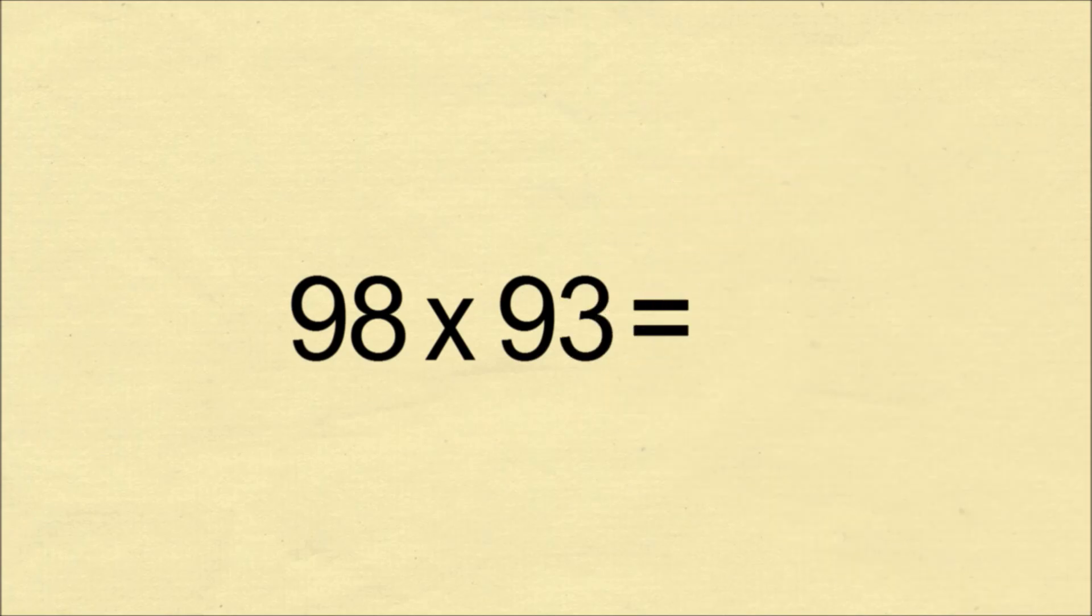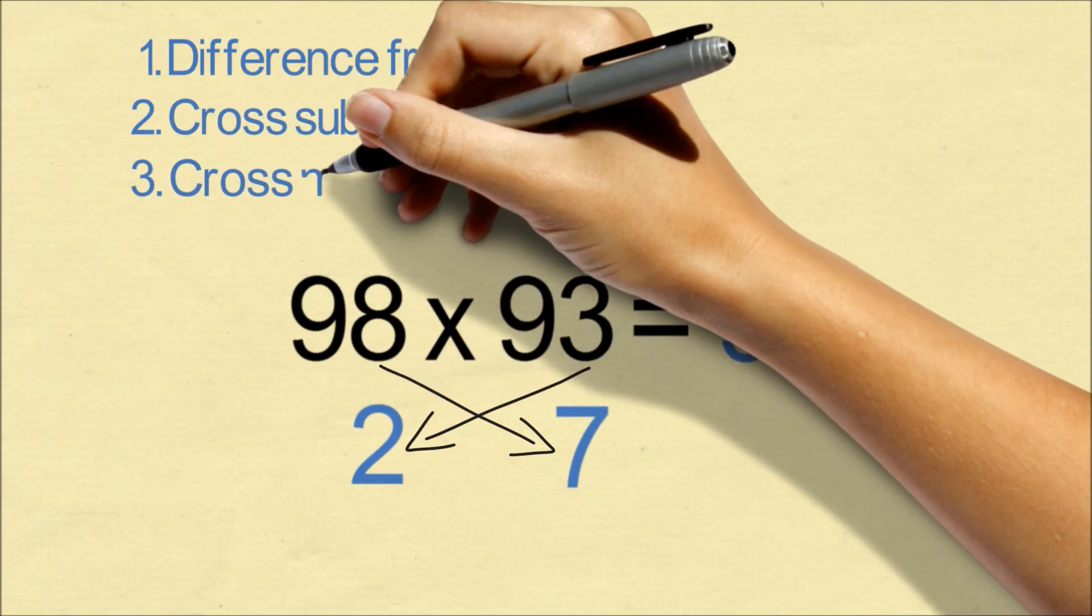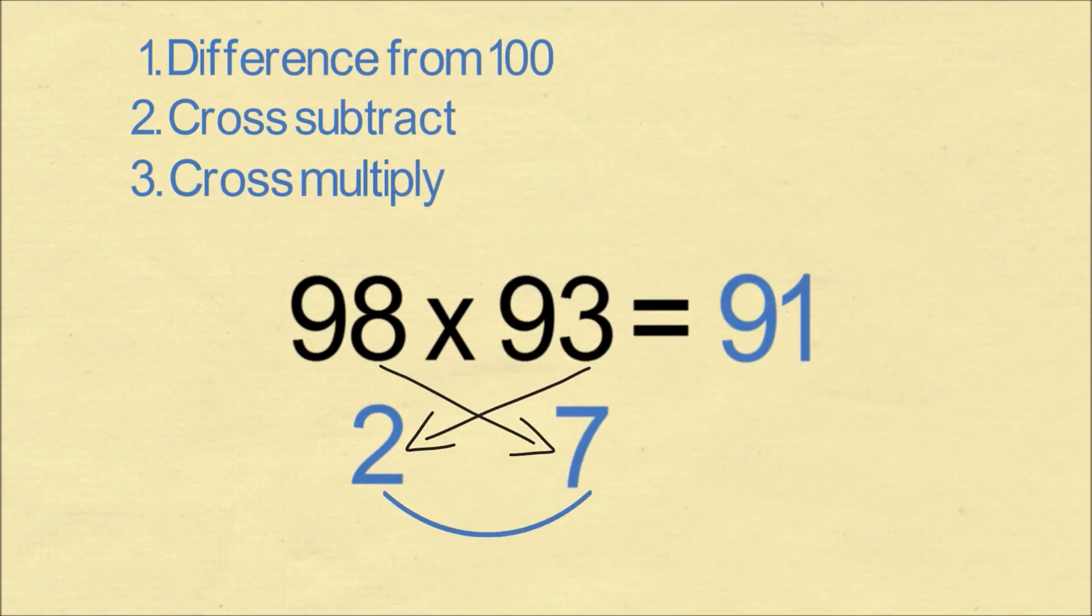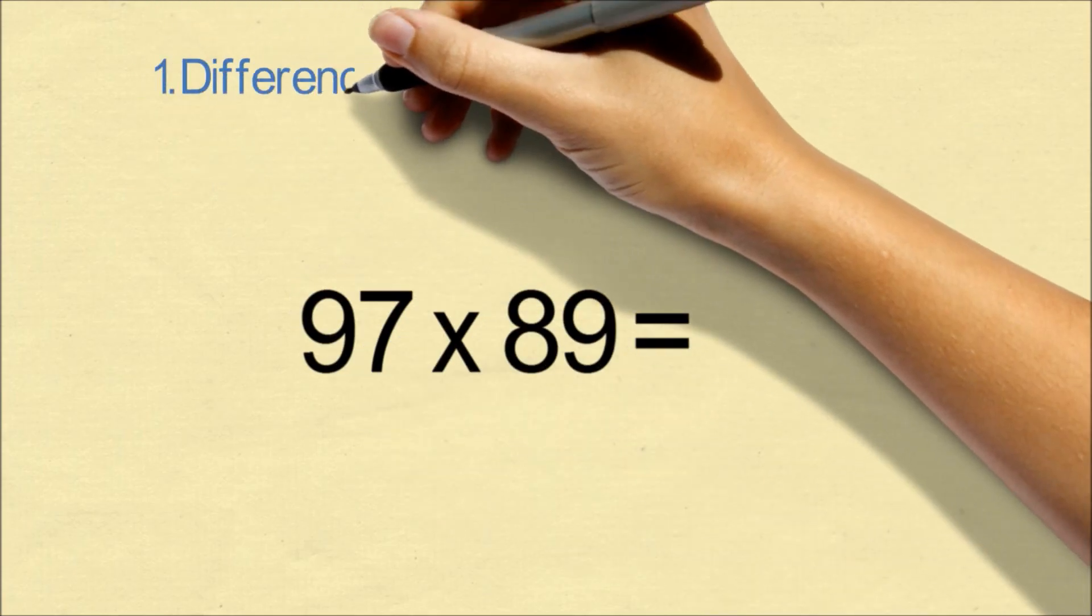Let's do another example, 98 times 93. We first take the difference from 100 of each number. Then we cross subtract. And finally we cross multiply. And then we get our answer, 9,114.